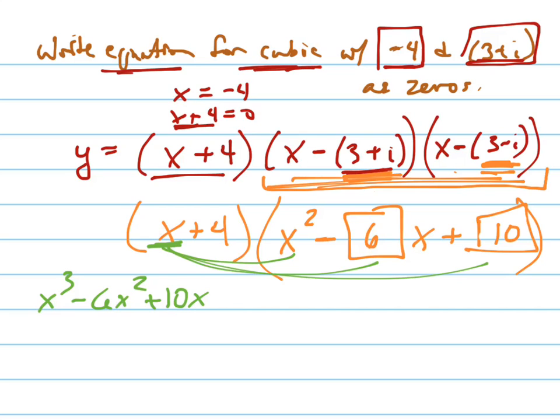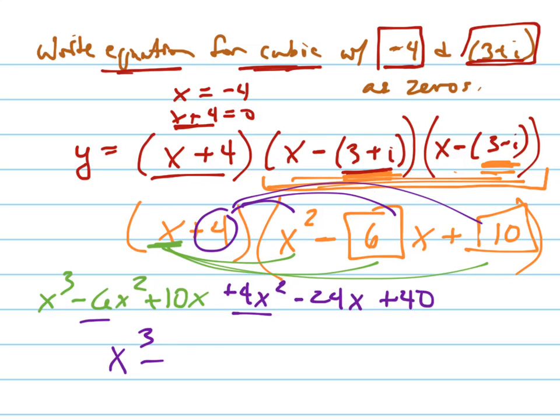And now I'm going to put with purple the 4 into here, here, and here. That's positive 4x squared minus 24x plus 40. And now I'm going to add like terms, x cubed minus 2x squared minus 14x plus 40.